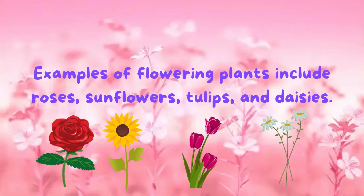Examples of flowering plants include roses, sunflowers, tulips, and daisies.